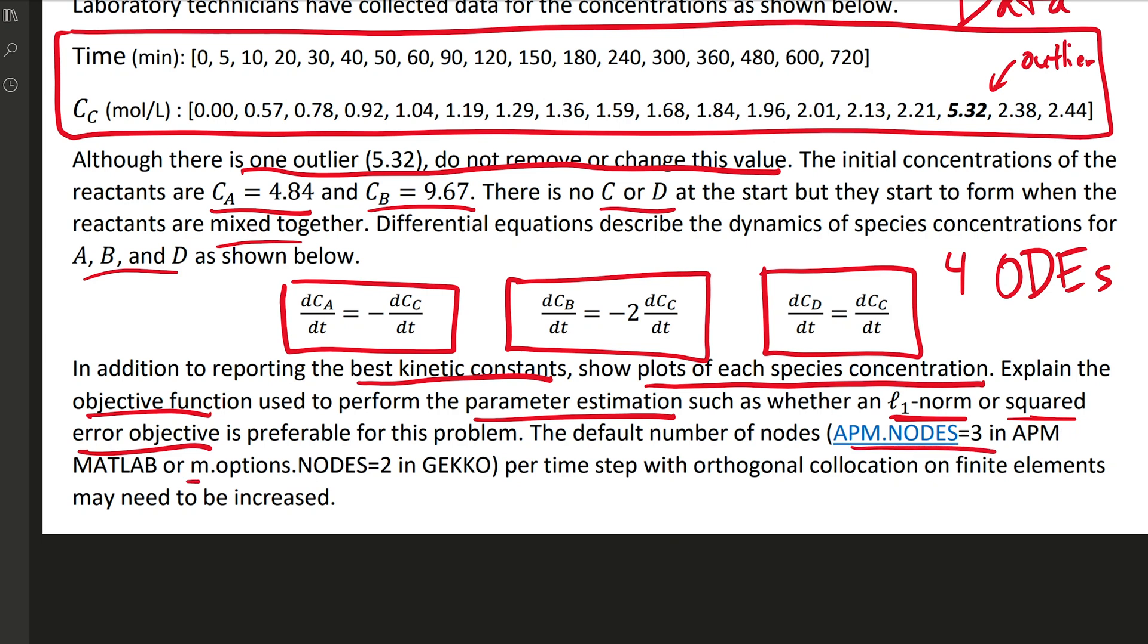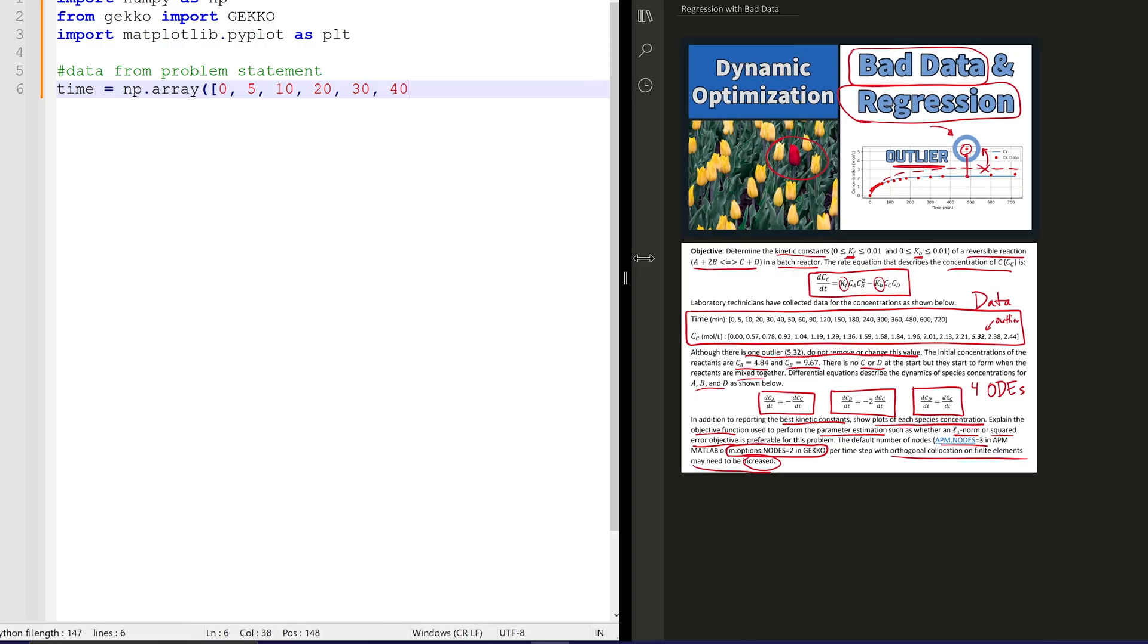And by default, the number of nodes is 3 in APM and is equal to 2 in GEKKO. So I recommend changing that to get a little bit more accurate. We're going to use orthogonal collocation on finite elements. Those number of nodes are going to be increased. In this case, it's going to do it for us within GEKKO.